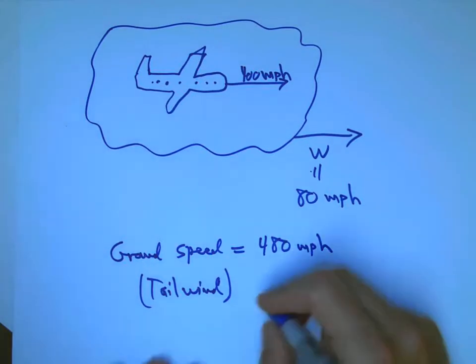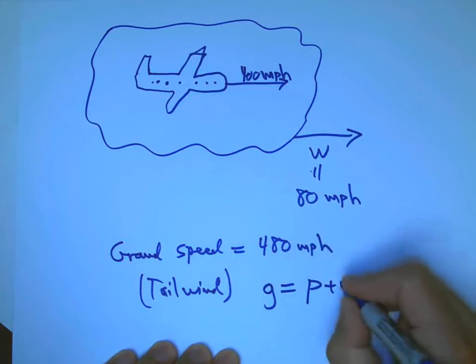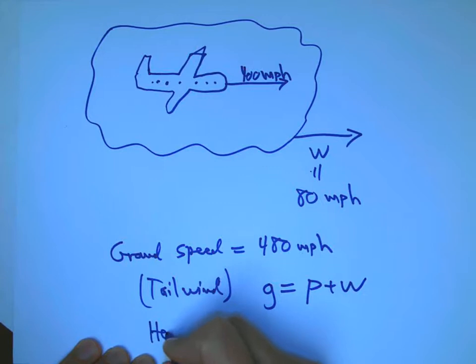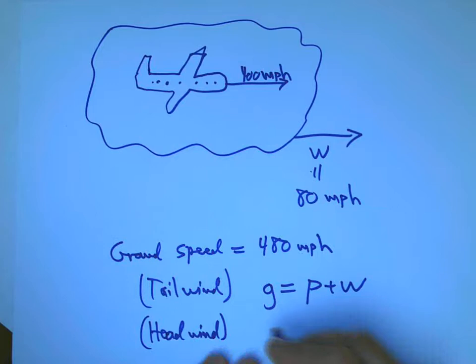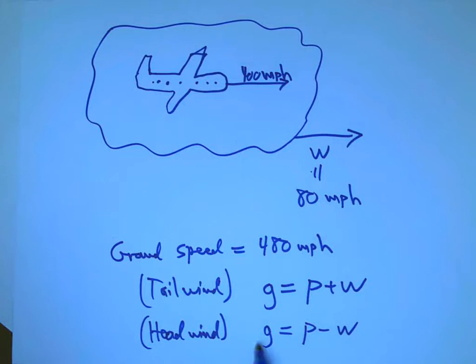So the ground speed of that plane would be 480 miles per hour because it's a tailwind, pushing on his tail. And that's where those speeds are going to add. So the ground speed is the plane speed plus the wind speed for a tailwind. For a headwind, pushing into his head against him, it's very much like the example of the guy walking on the train. The wind would be pushing this way against his motion, and the ground speed is less than the plane speed.